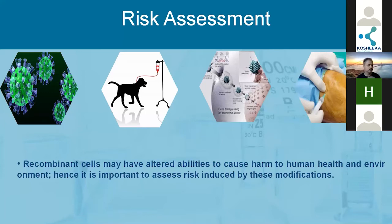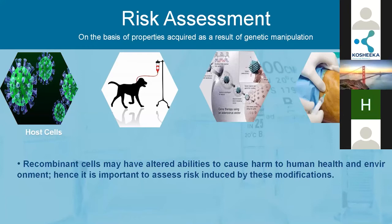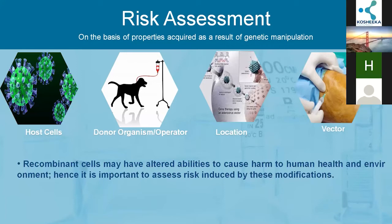Risk assessment can also be based on recombinant cells or any genetic modification in cell lines that may induce a risk to the operator. It is very important to know and understand the characteristic properties of the host cells before working on them. You also need to understand the impact on the donor organism or operator — if dealing with non-primate cells, they may have a hazardous impact. You should also consider the location through which genetic manipulation is introduced, and if using any vector, understand its characteristics to assess the associated risk.